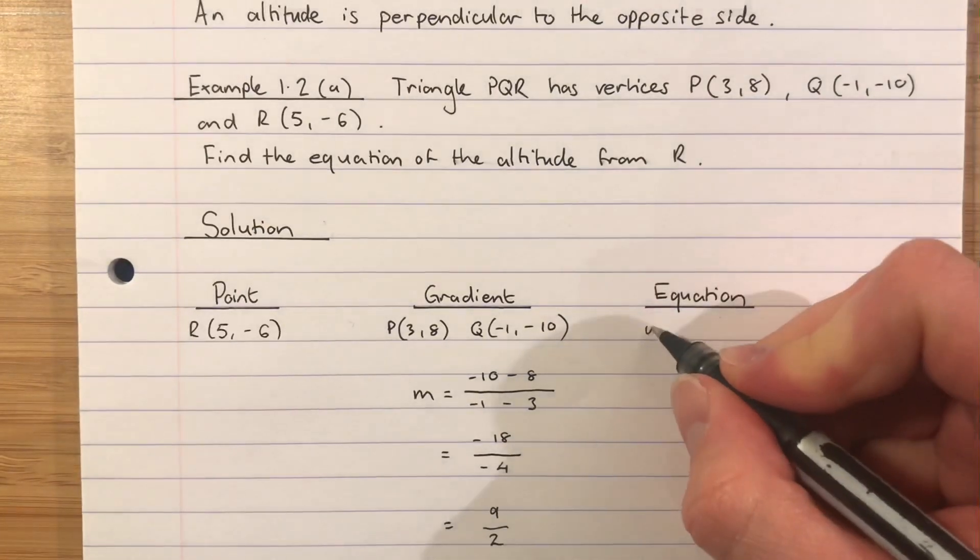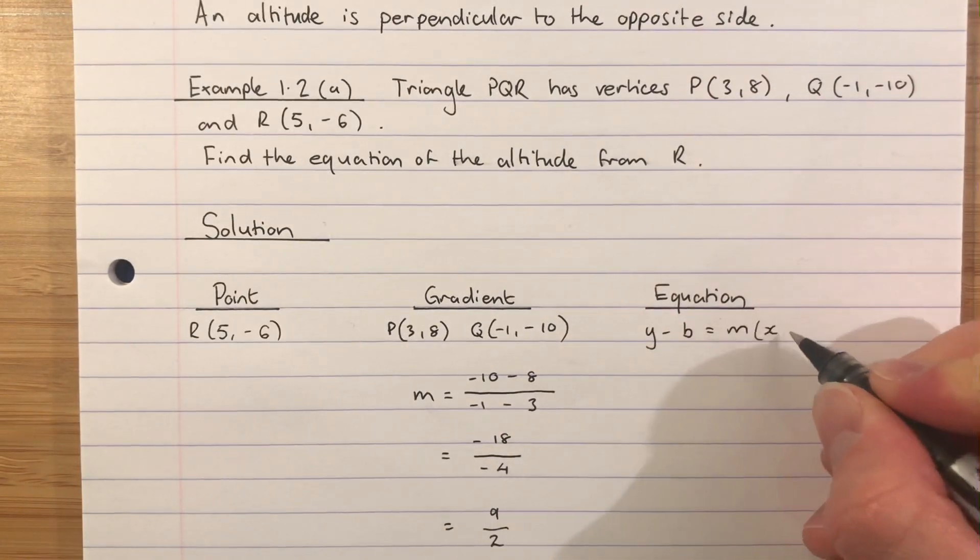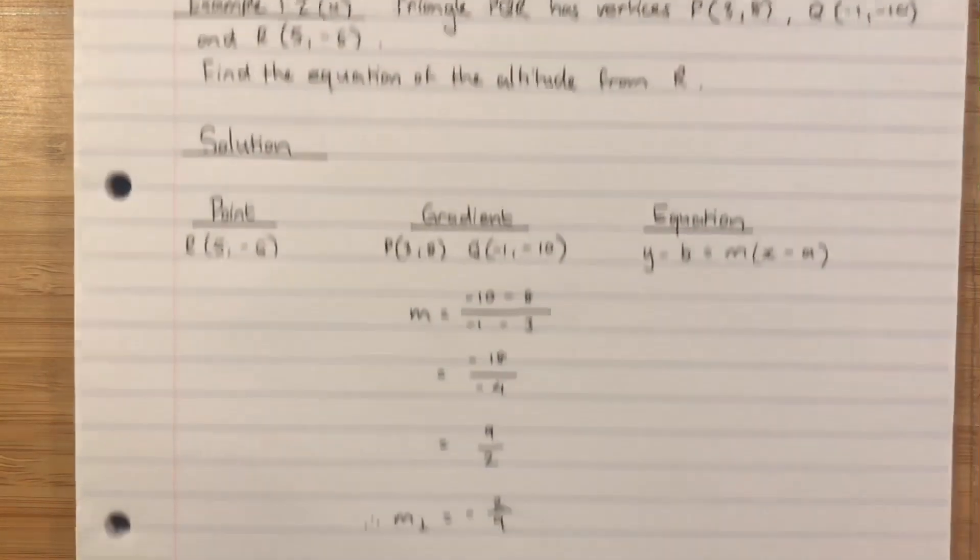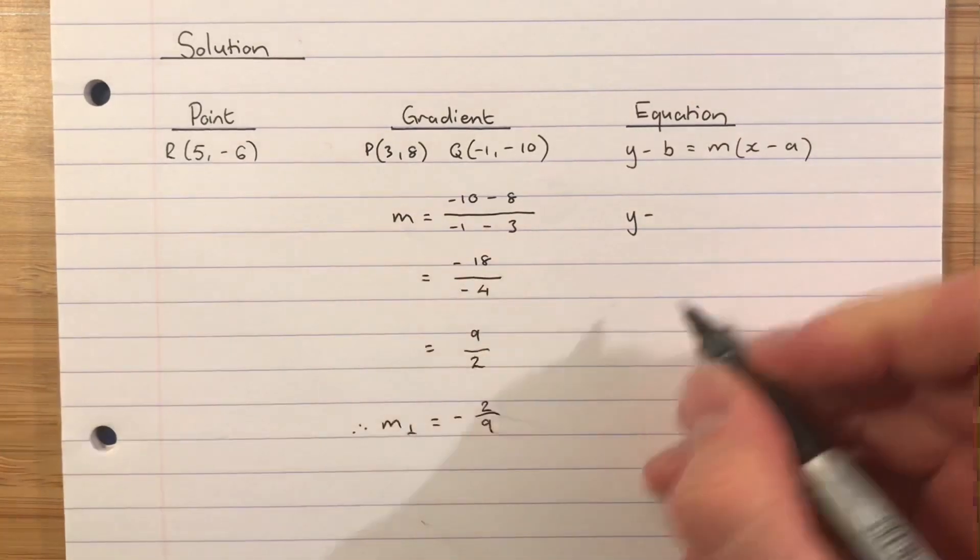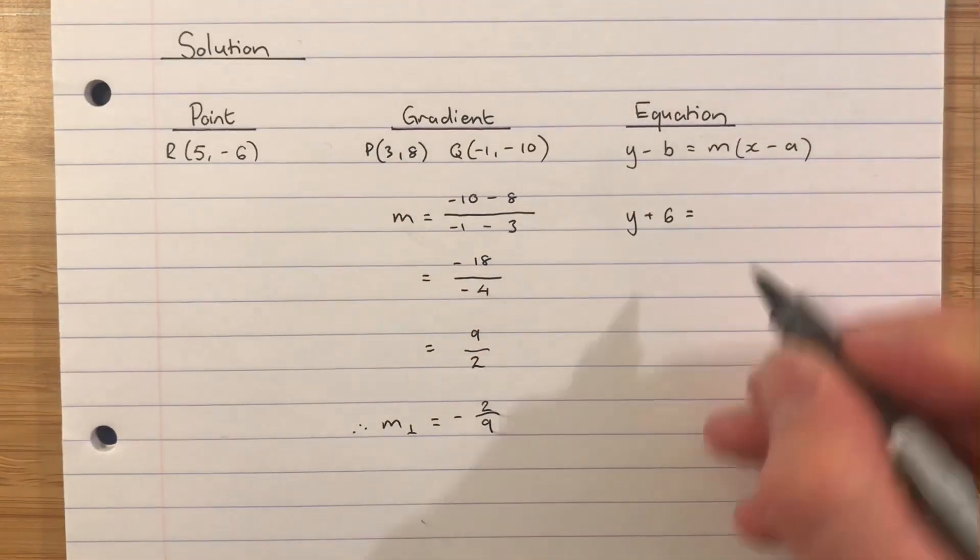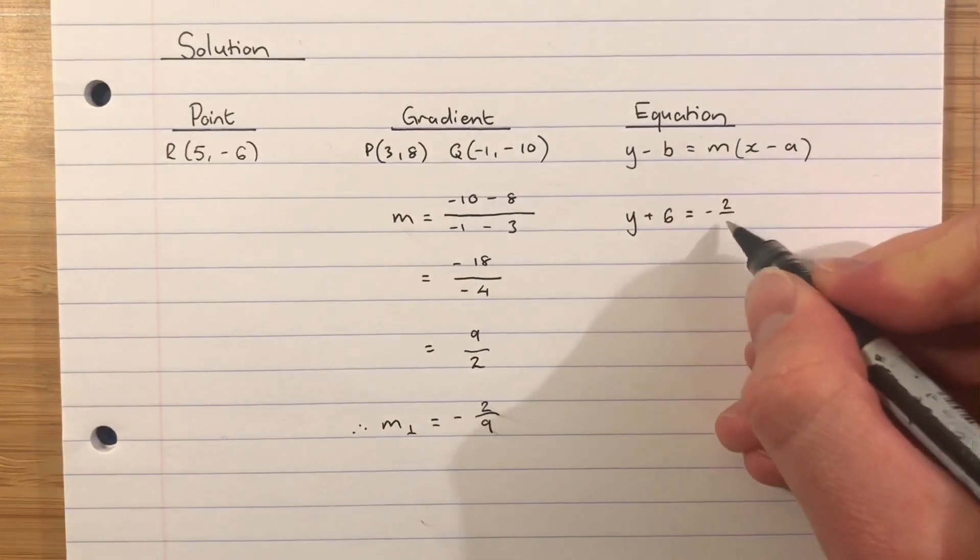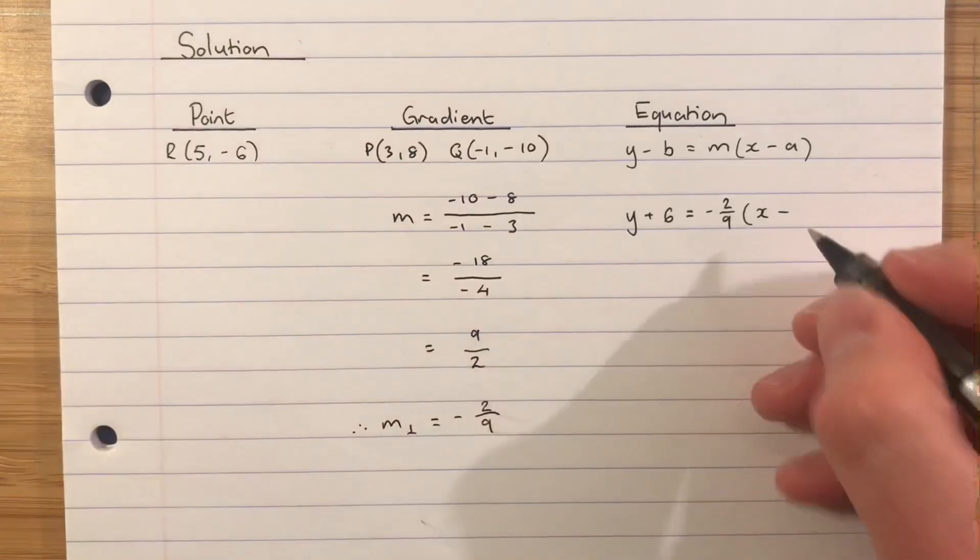And then we can go straight into Y minus B equals M brackets X take away A. So that will become Y subtract negative 6, that's Y add 6, equals my gradient is negative 2 ninths, brackets X subtract A is 5.